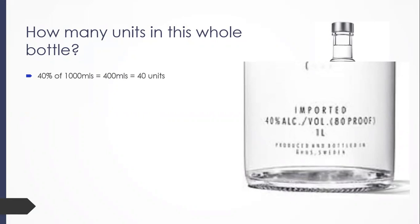We work out 40% of 1,000 mils, which equals 400 mils. One unit is defined as 10 mils of pure alcohol, therefore 400 mils of pure alcohol is equal to 40 units. To recap: one unit is 10 mils or 8 grams of pure alcohol. The only two pieces of information you need are the volume — one litre or 1,000 mils — and the percentage of alcohol concentration, which is 40% in that bottle.